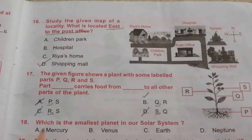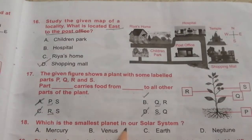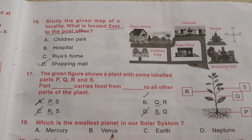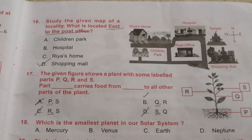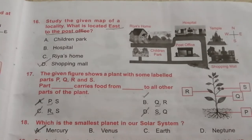Question 18: Which is the smallest planet in our solar system? The options are Mercury, Venus, Earth, Neptune. The answer is A: Mercury.